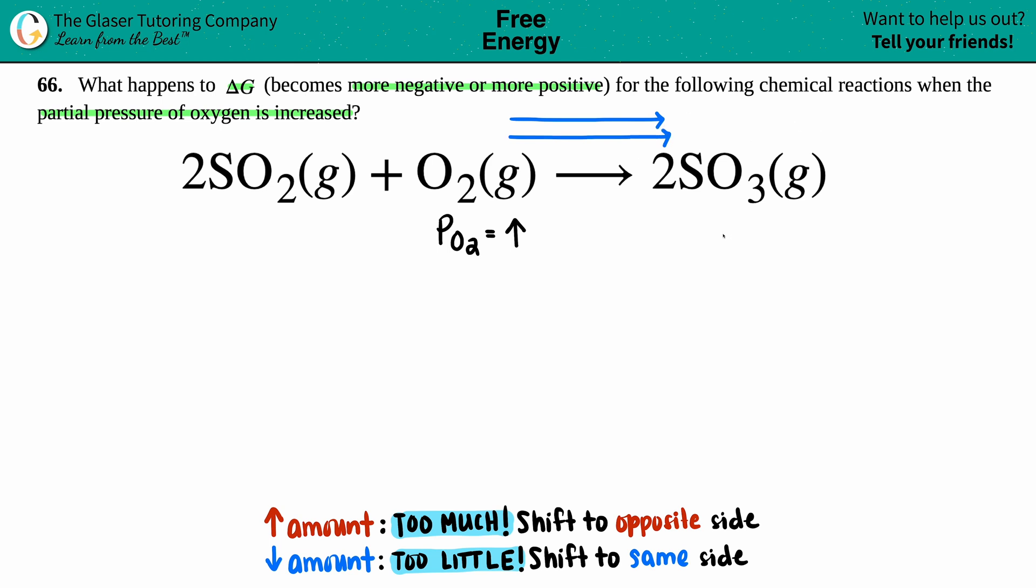That's exactly what this is doing, since it's already shifting to the products. It doesn't need any extra help, so this reaction is spontaneous. Always know that a spontaneous reaction is always linked with the delta G that's being negative.